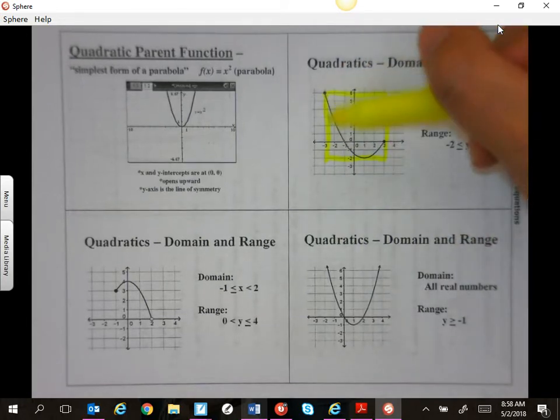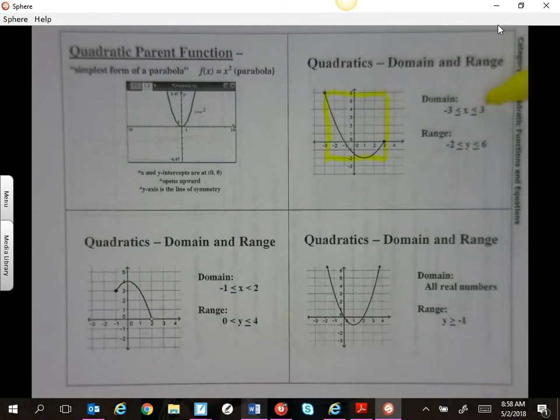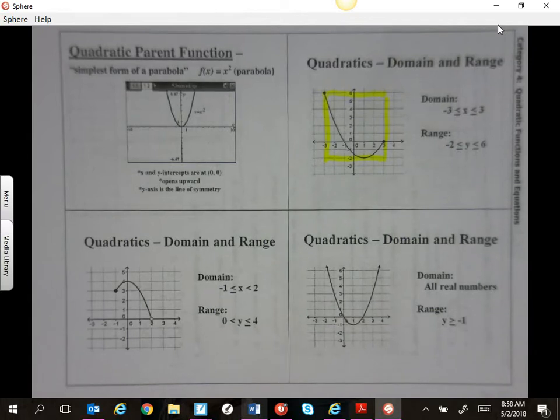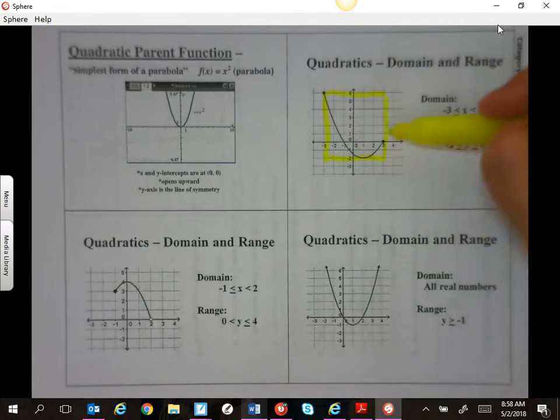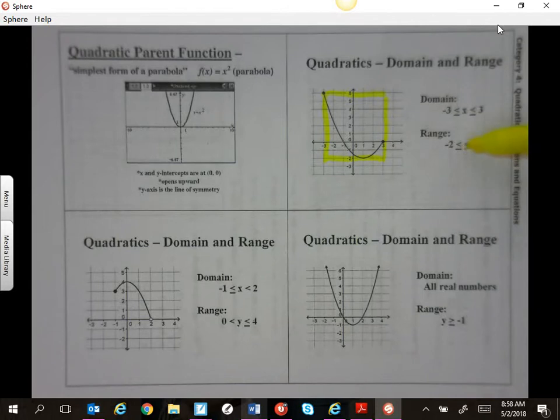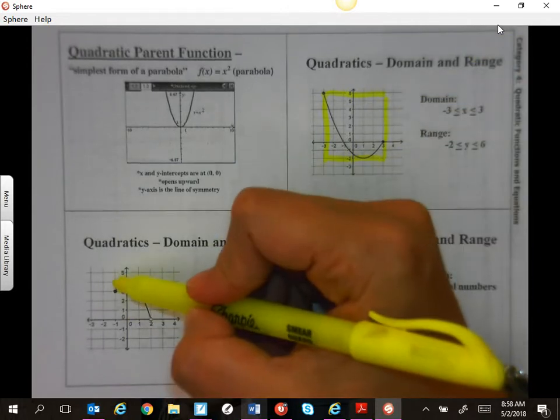Remember, domain is x, so negative three to positive three. Range is y, negative two up here to six. And when you highlight it, you can see that happening. And because these are actually touching those coordinates and they're solid dots, it's going to be or equal to.